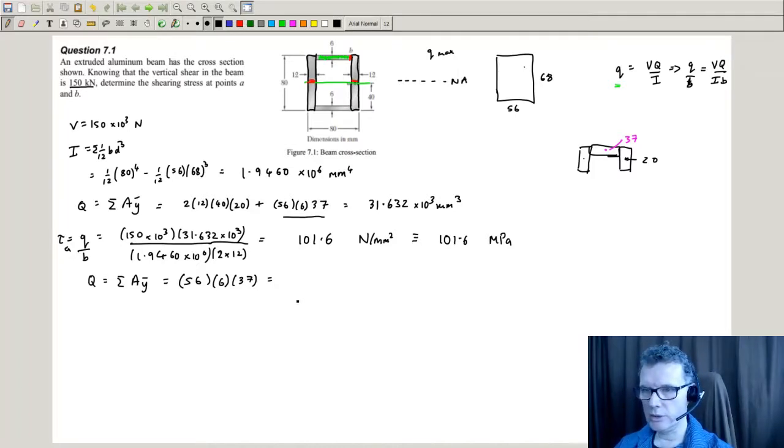So Q in this case will be 56 times 6 times 37. 12.432 times 10 to the 3, that would be millimeters to the power 3.